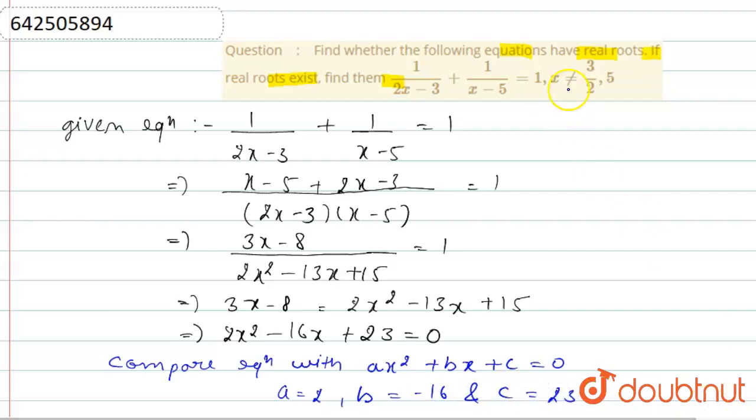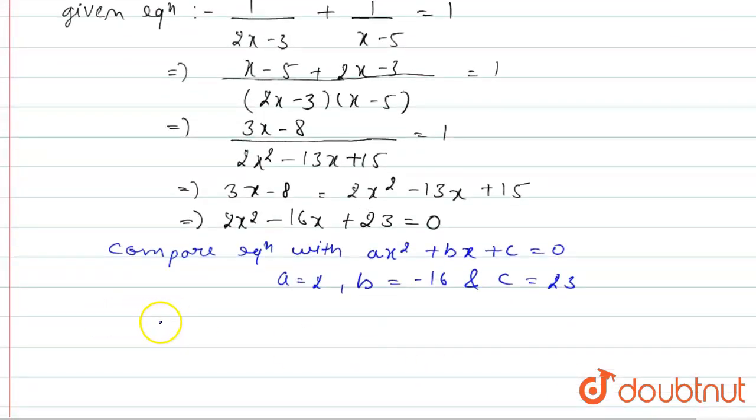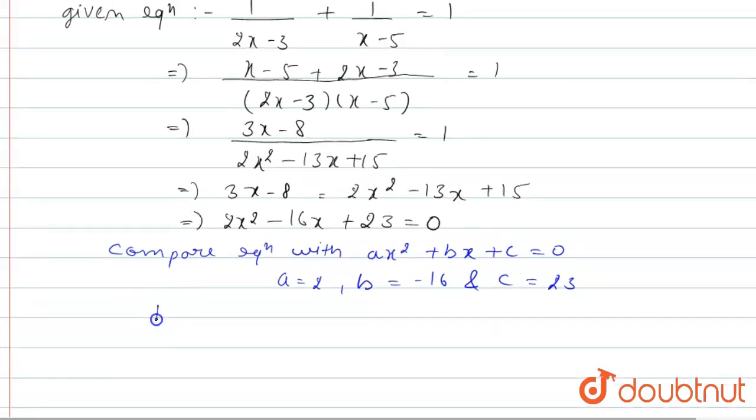For real roots to exist, we need to find the determinant. D is equal to b square minus 4ac. Here b is minus 16, so b square is 256 minus 4 multiply with 2 multiply with 23. We will find 256 minus 184 will be 72.